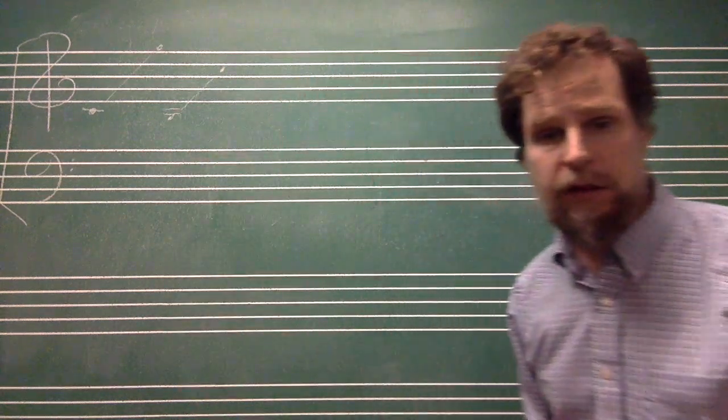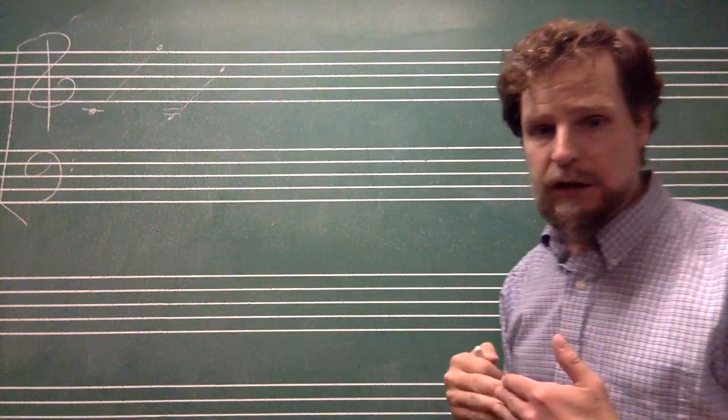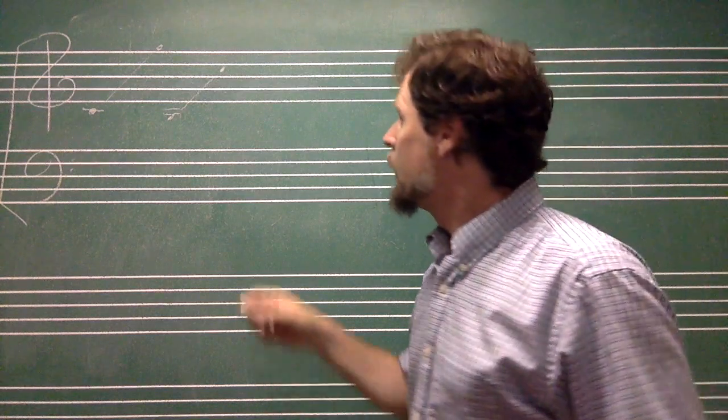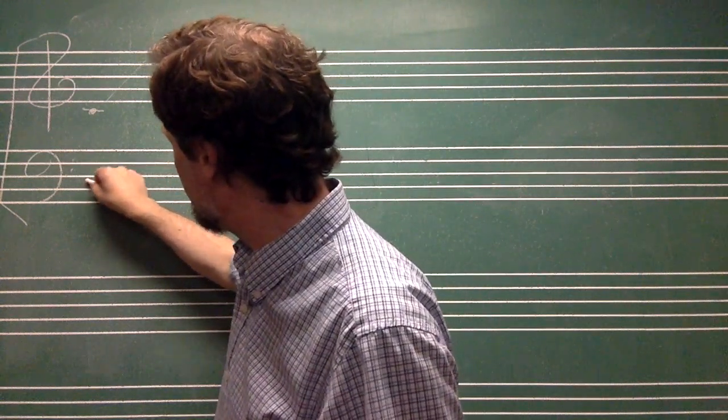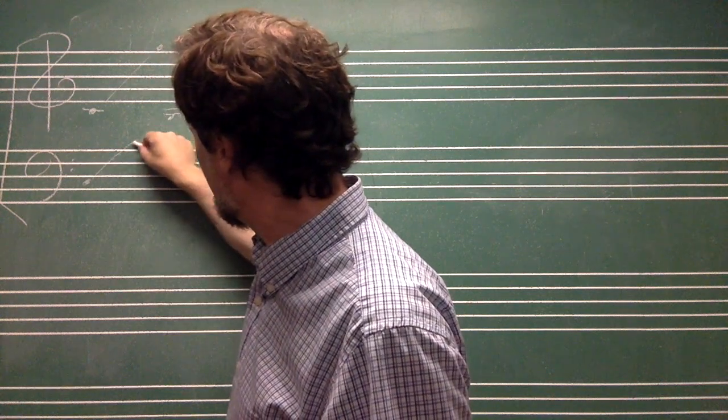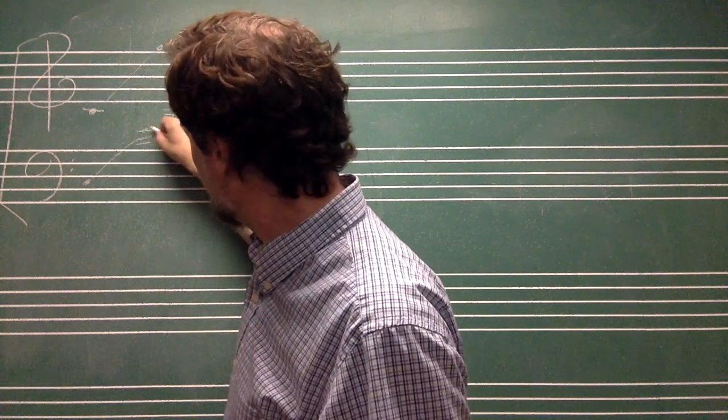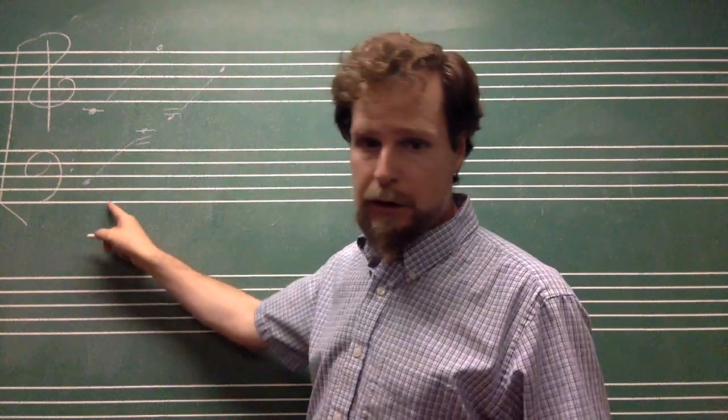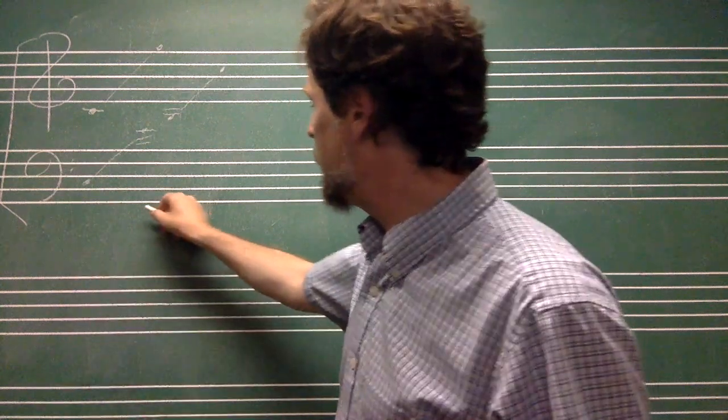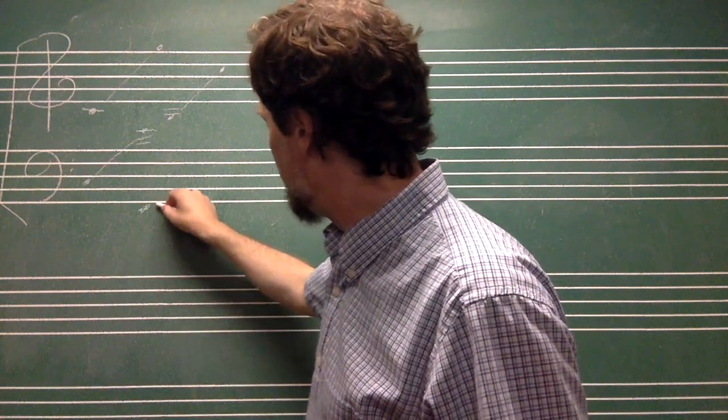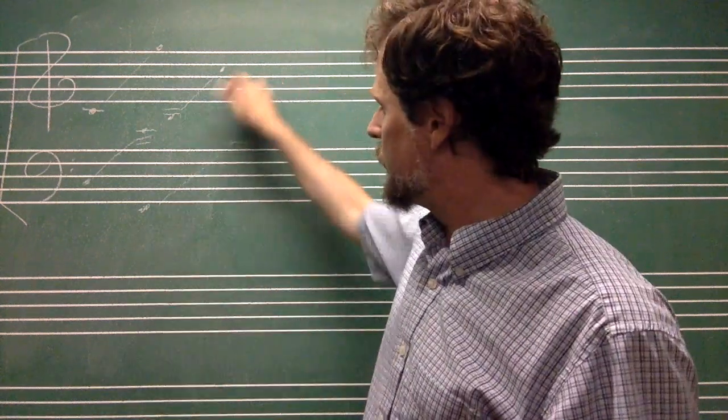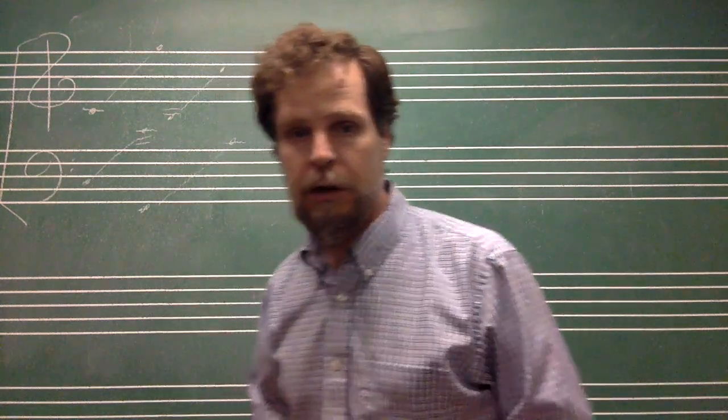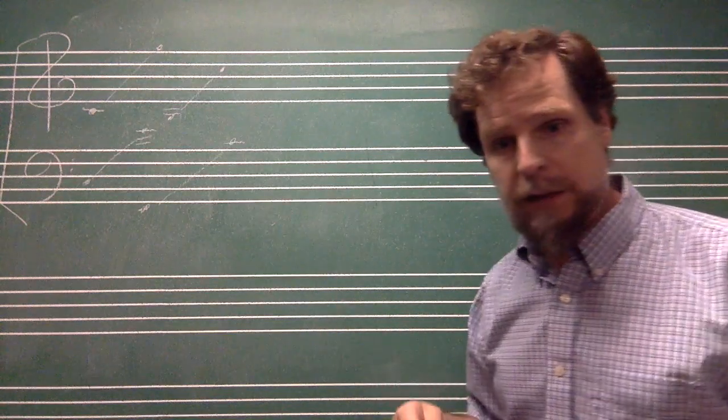The tenor part will be from C to G just like the soprano but an octave lower, and the bass part will be from about there to around there, so sort of similar to the alto part but an octave lower. They'll be on the bass staff.